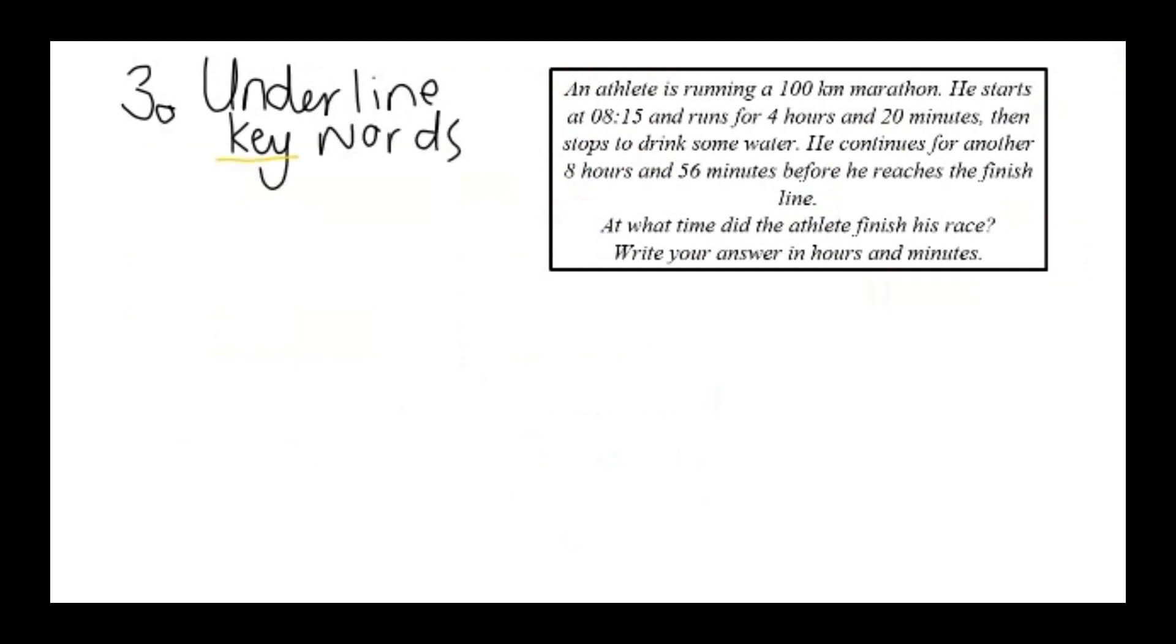So let's look at this example of where we actually go and underline what we see is important. We start with an athlete who's running 100k marathon. He starts at 8:15, runs 4 hours and 20 minutes, then stops to drink some water. He continues for another 8 hours, 56 minutes before reaches the finish line. At what time did the athlete finish his race?